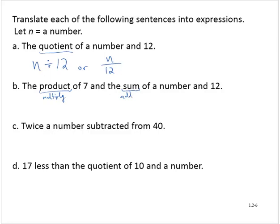So we need to multiply 7 and the sum. We have to find that sum first. The sum of a number and 12, and then we find the product.